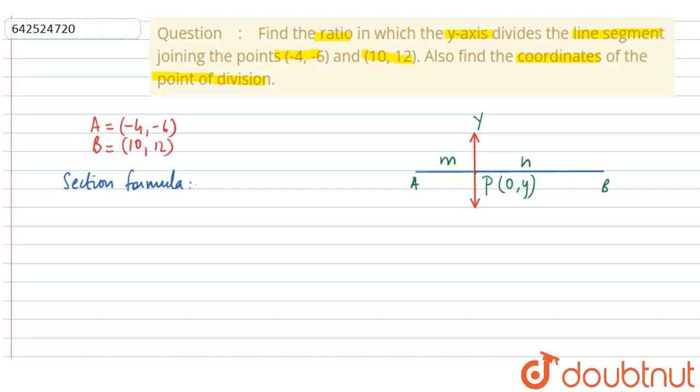So section formula, we can write it as, if the point P is (0, y), then (0, y) is equal to ratios M is to N. So M into x2 plus N into x1 divided by M plus N, M into y2 plus N into y1 divided by M plus N.